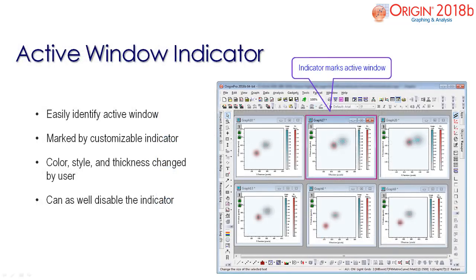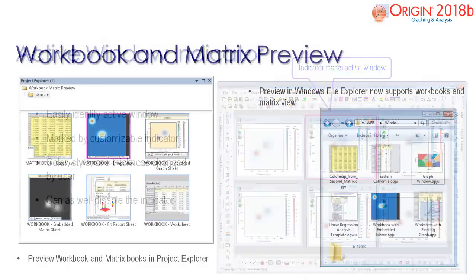The active window indicator is a new feature which allows you to easily identify your active window. The indicator is marked by default as a line outlining the active window. You can customize the indicator by changing the color, line thickness, and style.